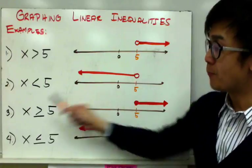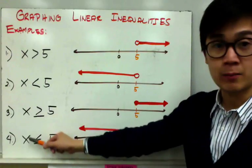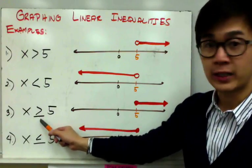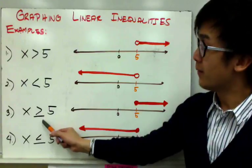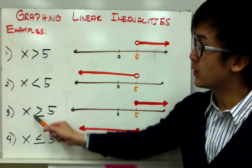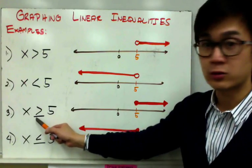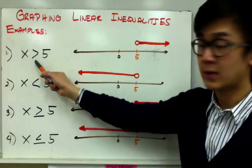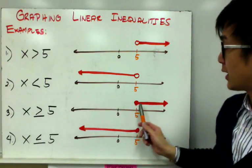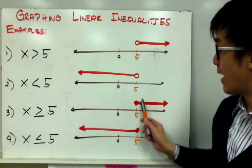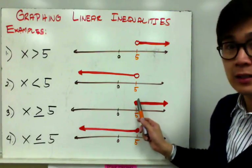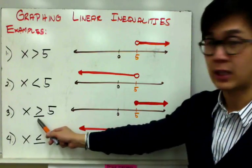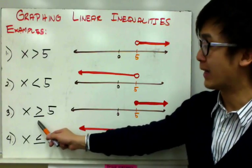For examples number 3 and number 4, I have x greater than or equal to 5. What is the difference between the greater than or equal to symbol and the greater than symbol? The difference is pretty simple — you have a shaded circle if you have greater than or equal to as an inequality.